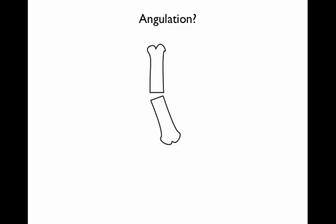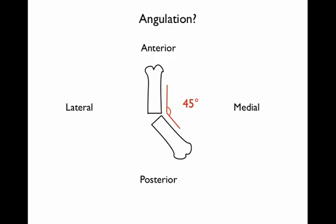Next is angulation — the distal fragment having become angulated in comparison with the proximal fragment. You can describe this as anterior or lateral angulation, but in orthopaedics there are more specific terms referring to specific joints. For example, at the wrist, dorsal or volar angulation. Here we can see that the distal fragment has been angulated towards the medial aspect by approximately 45 degrees.